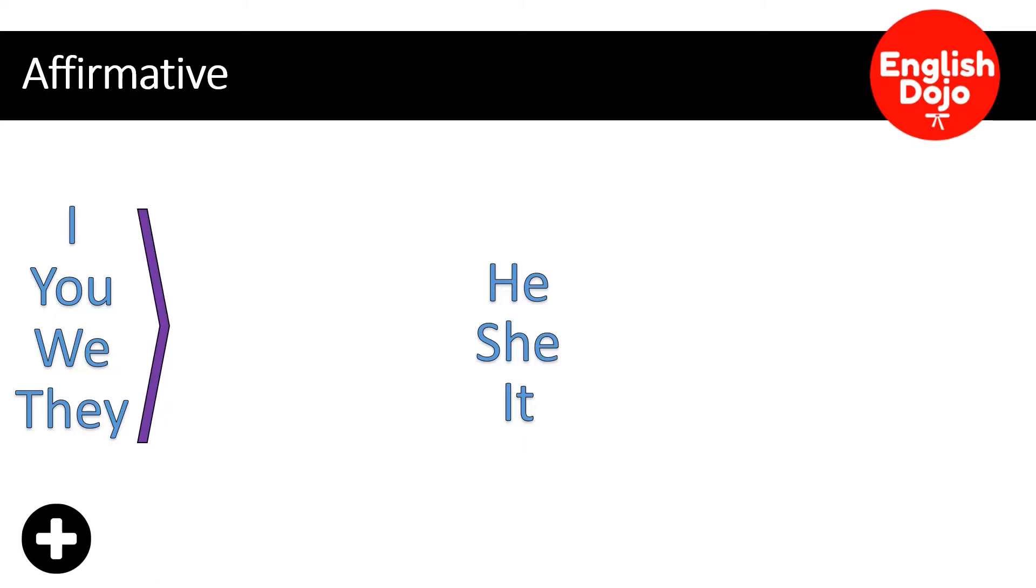Conjugar es muy fácil. Para I, you, we, they lo único que necesitas es el verbo. Vamos a utilizar work como ejemplo. Si te fijas, no está conjugado. Simplemente work, así como lo encuentras en el diccionario. Trabajar. Entonces sería I work, yo trabajo. You work, tú trabajas. We work, nosotros, nosotras trabajamos. They work, ellas, ellos trabajan. Entonces, solo necesitas el verbo.